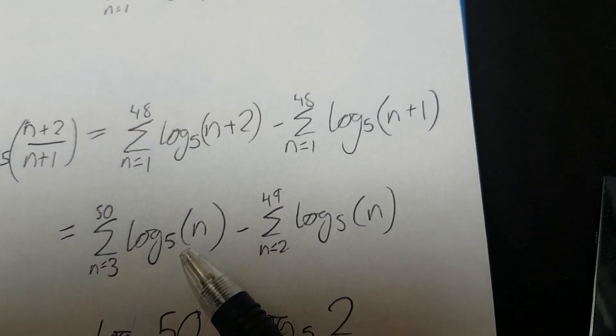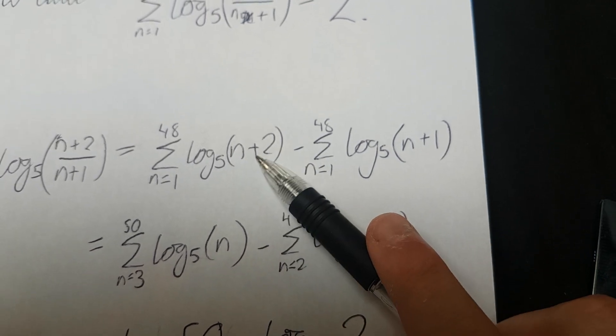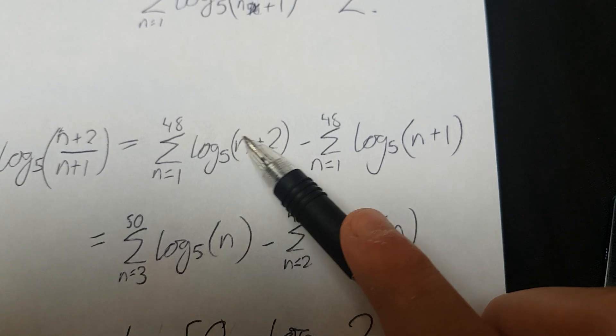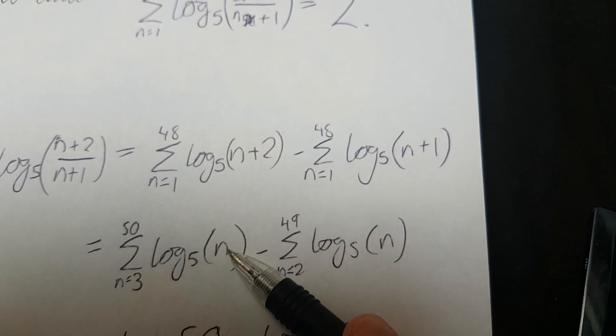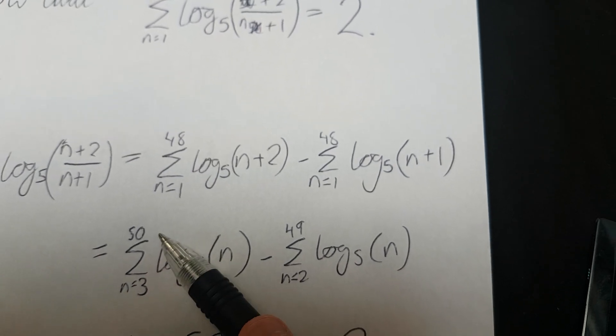Now this is the step that a lot of people may have missed. So it looks a bit weird at first, but you have n plus 2, right? So for 48, what does n plus 2 go to? Well, it's 50, right? So that's the same as log_5, 48 plus 2 is the same as log_5 of 50.